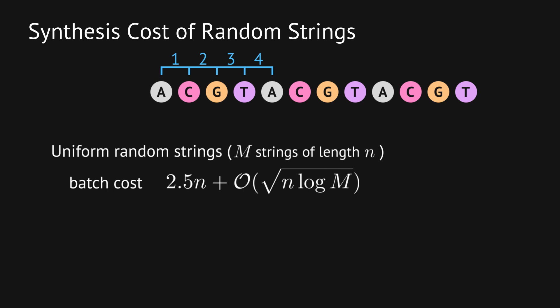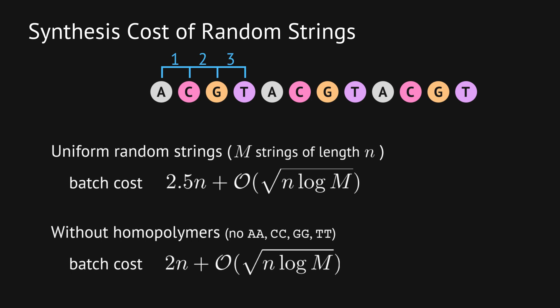For biological reasons, we sometimes use strings without sequentially repeated characters which are known as homopolymers. In this case, the random walk takes 1, 2, or 3 steps and the expected distance is 2. And the total cost for m strings is a little bit more than the average. This is a nice improvement and we show in our paper that these bounds are essentially tight.